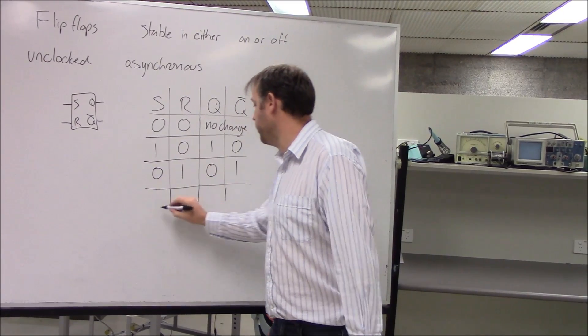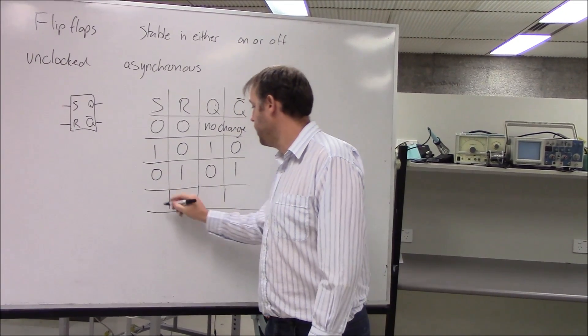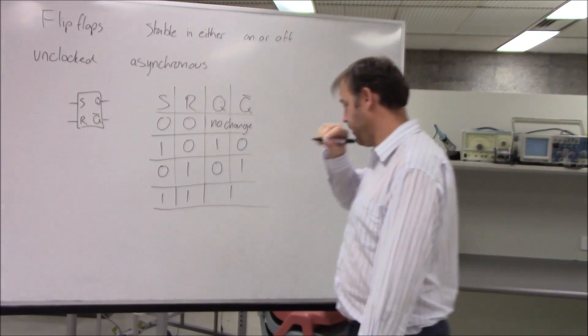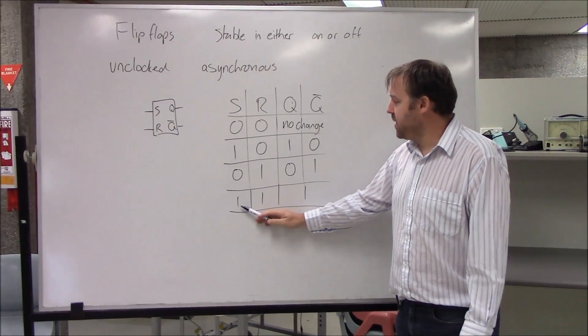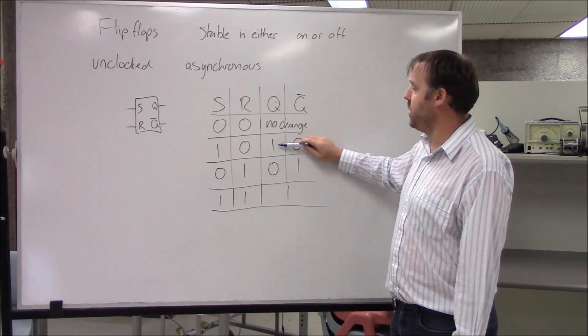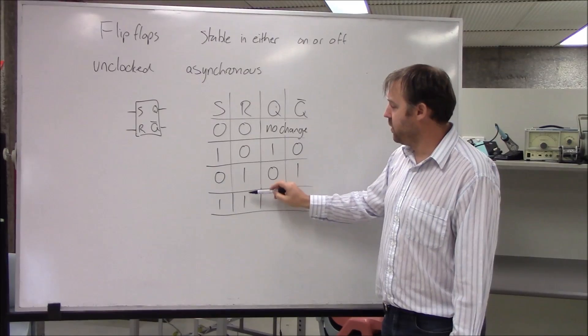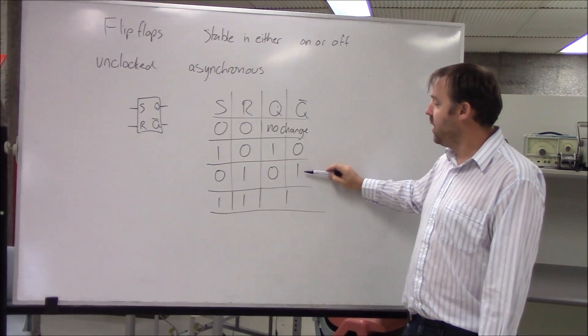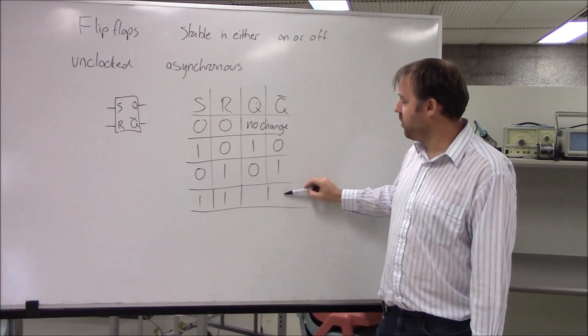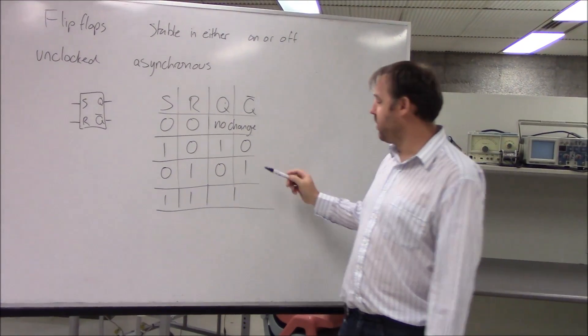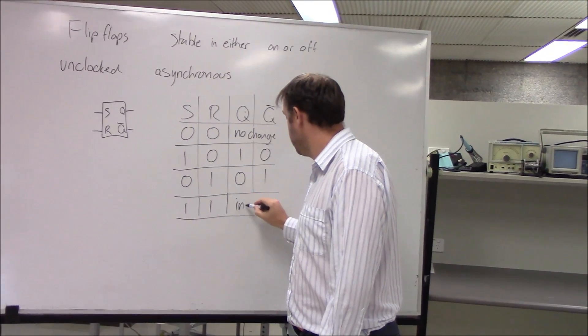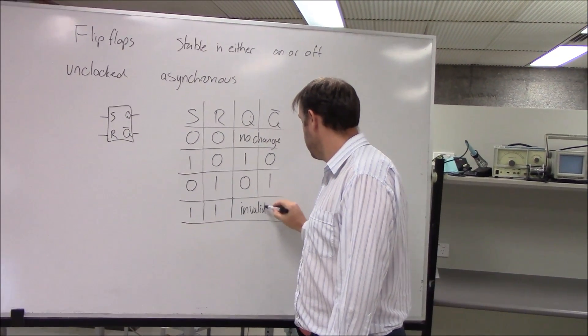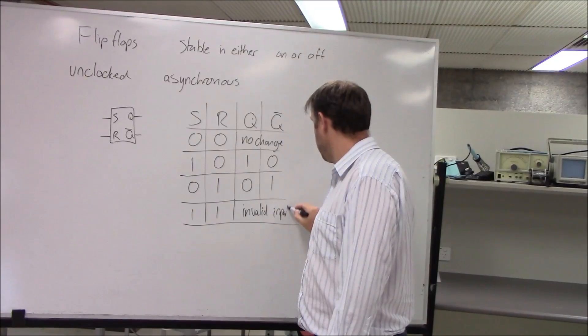The final possible state that we could have on the input here is both set and reset high. In this case, what set is trying to do is set Q to high, and what reset is trying to do is set Q-bar to high. Well they both can't be high, can they? Well they're both trying to be high, and they both can't be high because they've got to be complementary.